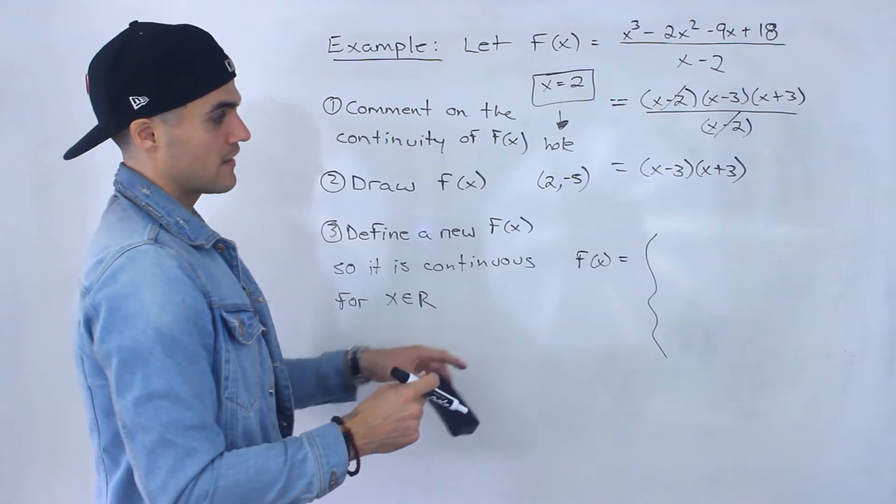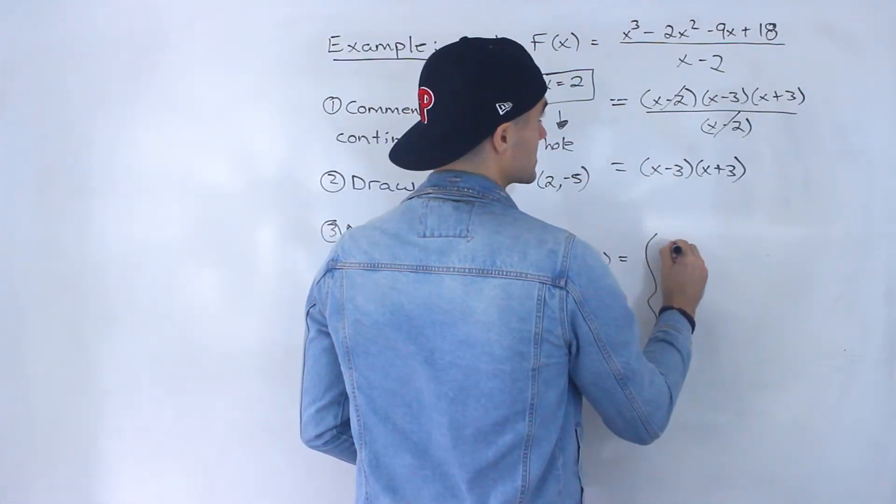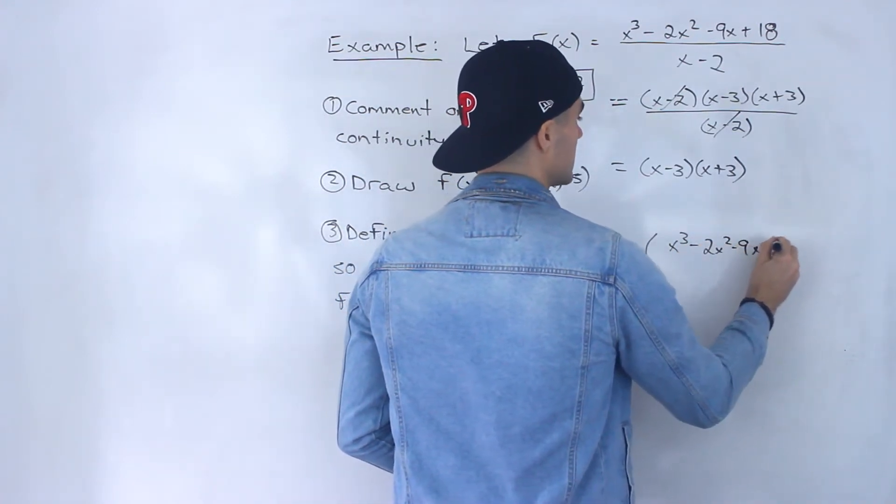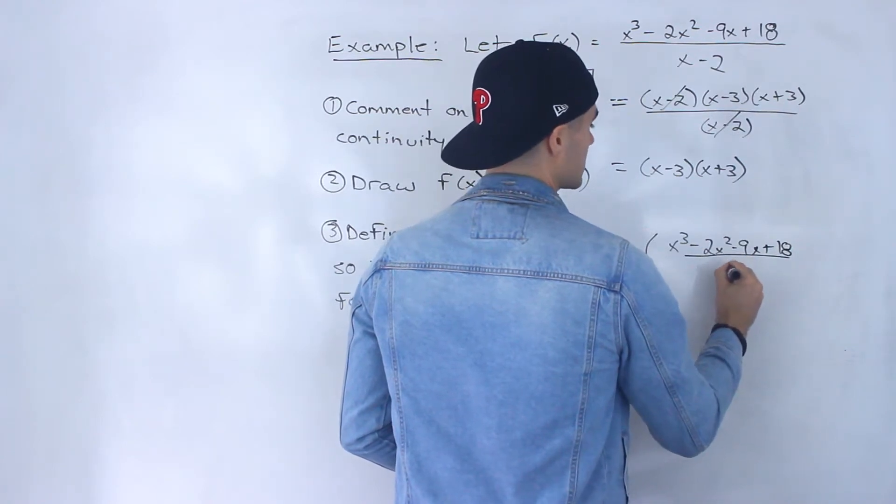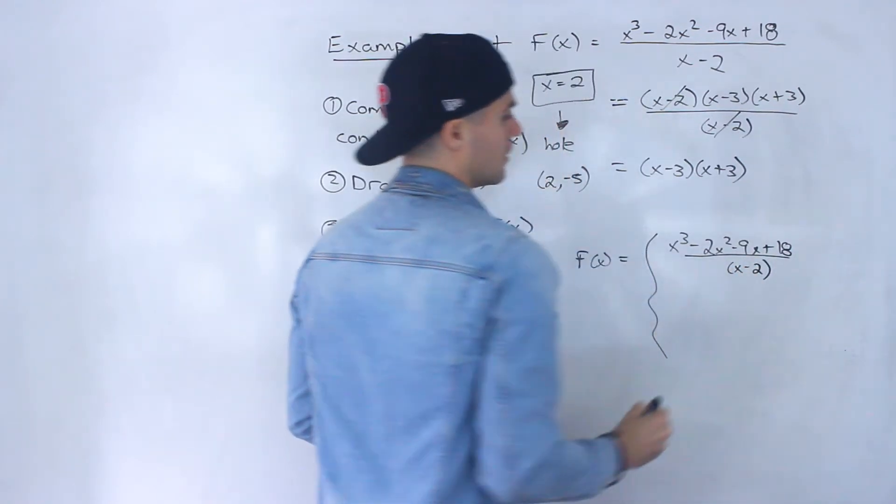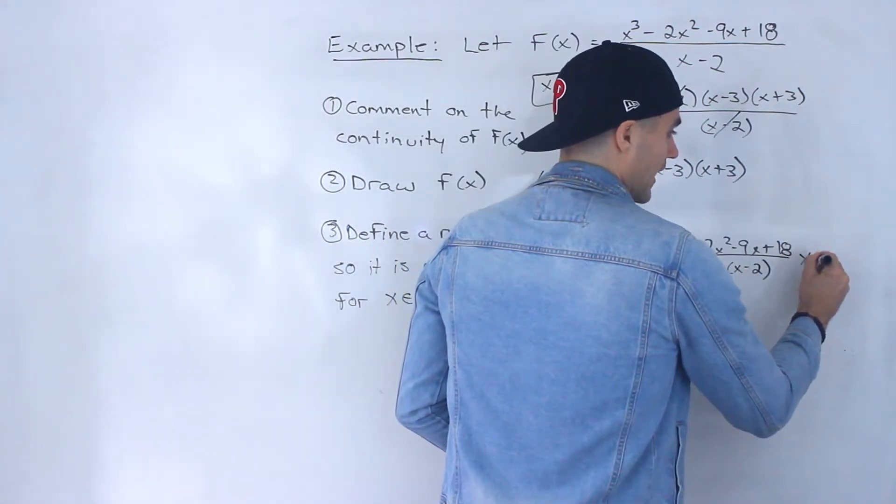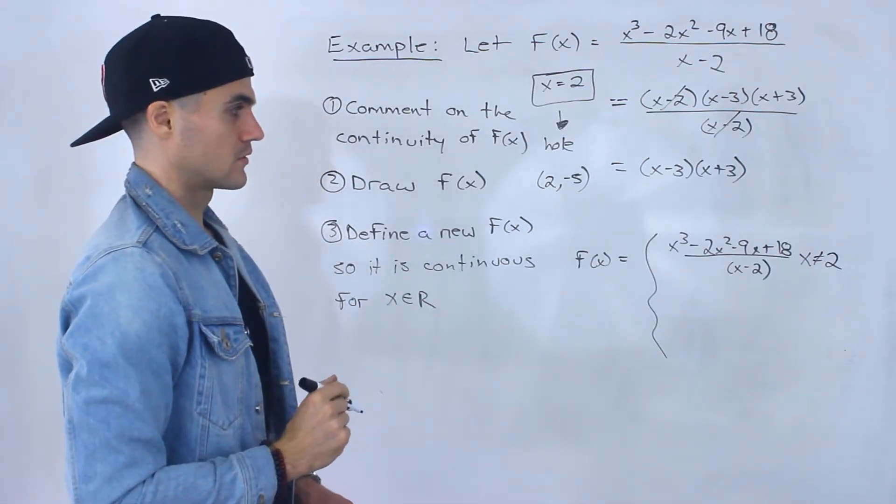is that this value of f of x takes these values, so we can say x to the power of 3 minus 2x squared minus 9x plus 18, and this would be all over x minus 2. We would say that it's defined as this for all x values not equal to 2,